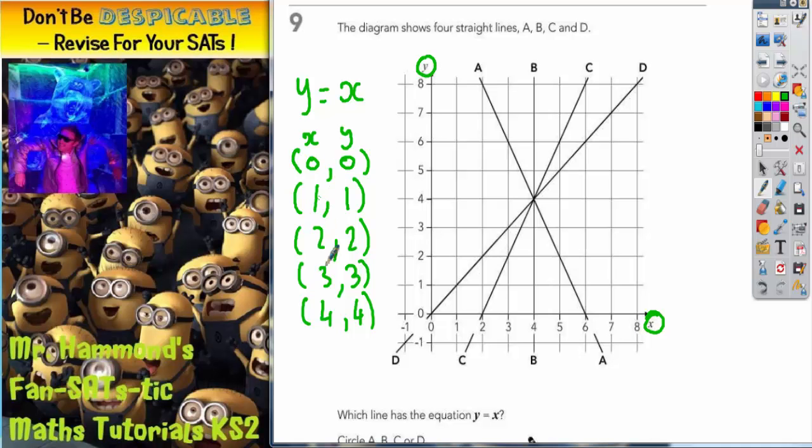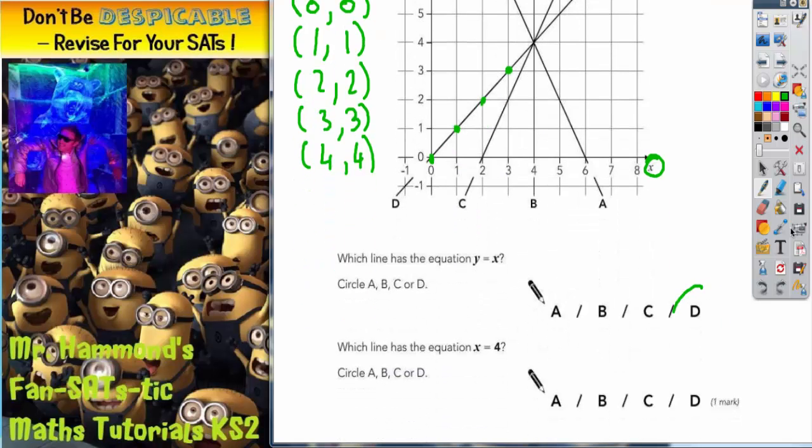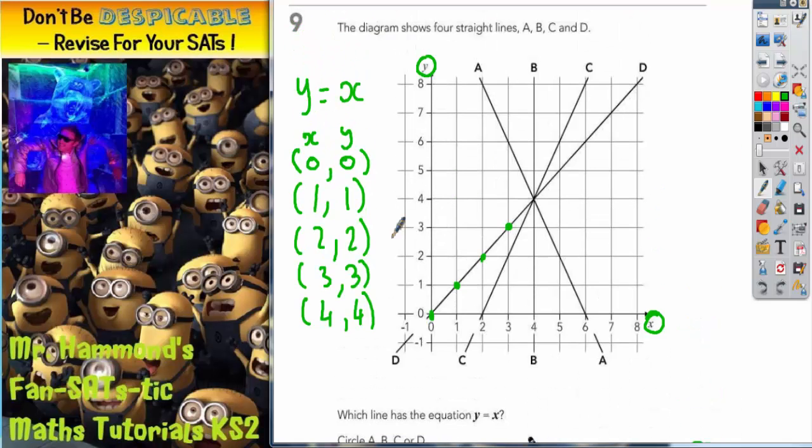So if we plot some of those coordinates. We've got 0, 0 which would be there. 1 across 1 up would be there. 2 across 2 up would be there. 3 across 3 up would be there. Now at this point in time it's a pretty safe bet. We've got 4 coordinates on line D. So it looks as though Y equals X is line D. Because all the coordinates where Y is equal to X lie on line D.